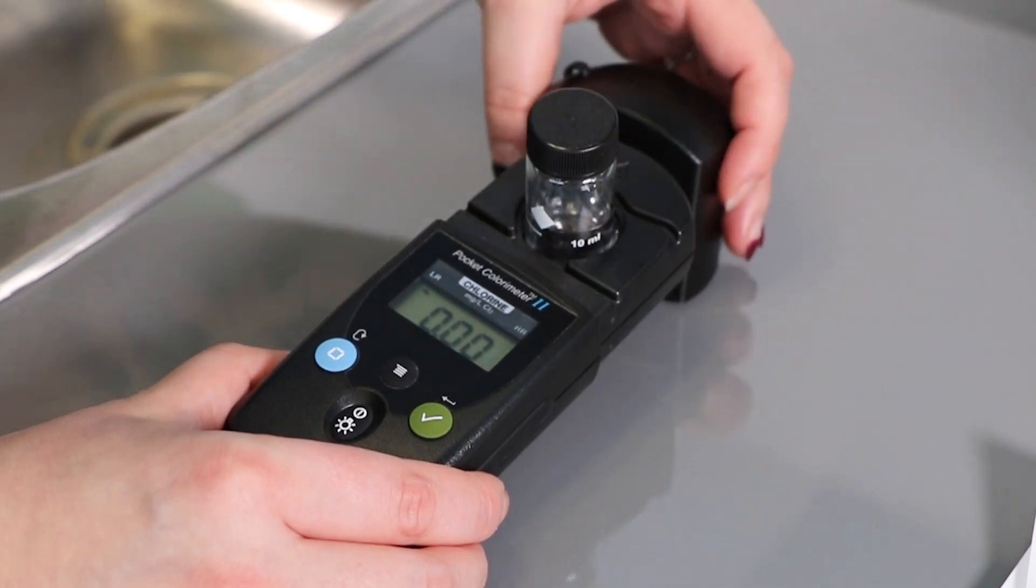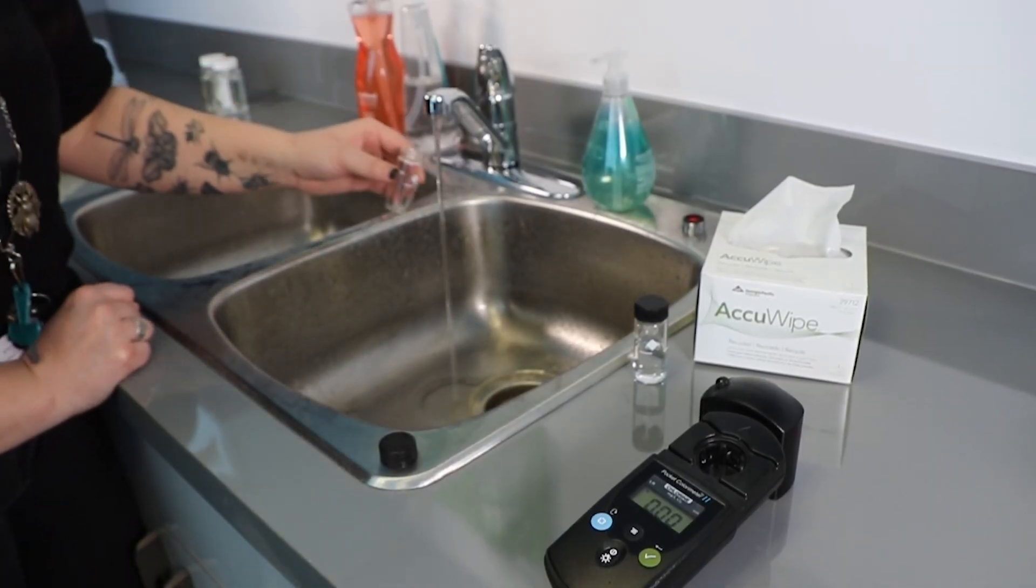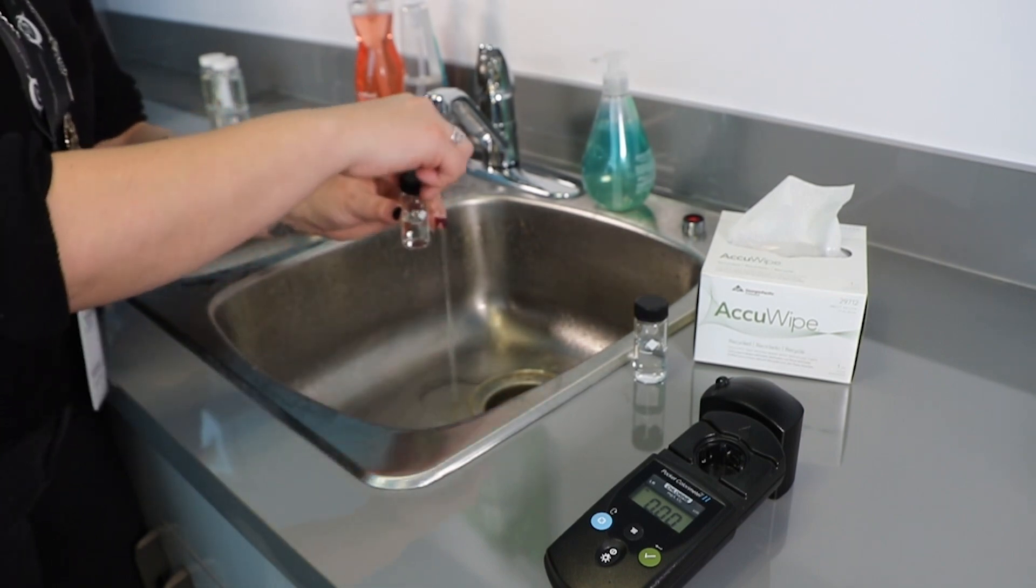Remove the sample vial from the measuring chamber. You have now completed meter zeroing. Fill a different sample vial with the water from the tap to the 10 milliliter line.